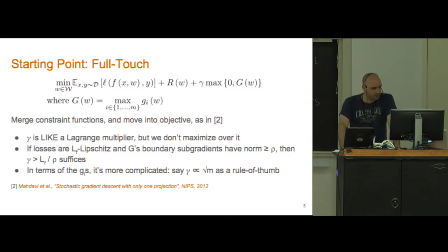In terms of the individual gi's it's a good deal more complicated, basically because we have to consider not just the norms of the gradients of the g's on the boundary but also the angles at which they intersect.